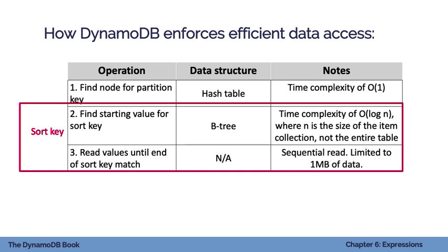Just like a phone book, it's easy to find a particular entry when you know how it's organized. Importantly, that O(log N) N is the size of the item collection itself, not the entire table. So even if your table reaches two or ten terabytes, you're only searching within a particular partition, maybe two or three gig. DynamoDB finds the starting sort key value, does a sequential read on disk, and cuts off at the one megabyte limit — paginating and requiring another request — keeping everything highly efficient.